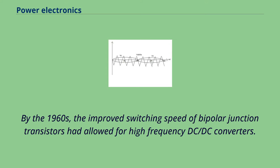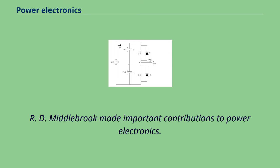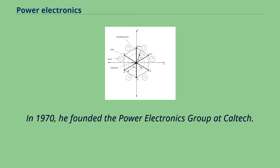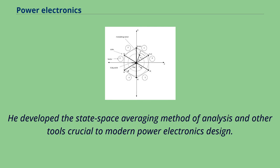By the 1960s, the improved switching speed of bipolar junction transistors had allowed for high-frequency DC-DC converters. R. D. Middlebrook made important contributions to power electronics. In 1970, he founded the Power Electronics Group at Caltech. He developed the state-space averaging method of analysis and other tools crucial to modern power electronics design.